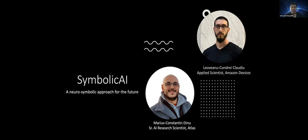Just some brief introductions. Lil is currently an applied scientist for Amazon Devices. His main expertise lies in deep learning, and his most recent focus is large language models. As for Marius, he's currently working as a senior AI research scientist at Atlas and is also a PhD student at the Institute of Machine Learning at Johannes Kepler University in Linz. His main expertise lies in deep reinforcement learning, domain adaptation, and the study of neurosymbolic AI.